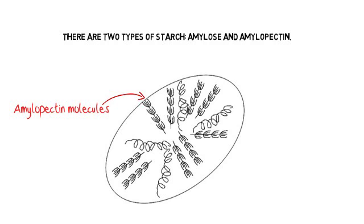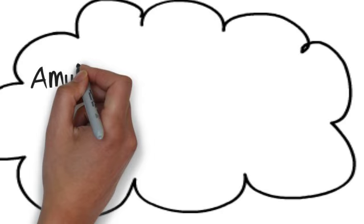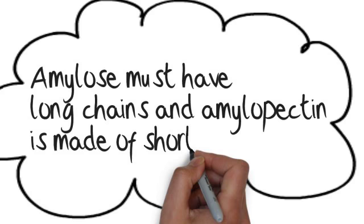A starch granule needs to have amylopectin to be a granule but amylose is not necessary for a granule to form. Amylose is made of much longer chains than amylopectin and we could think of it as a biological polymer. The amount of it that is present explains many of the sensory differences between varieties of starch containing foods.